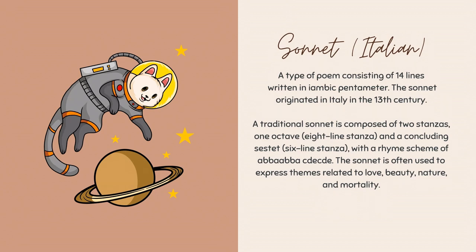The rhyme scheme of the Italian sonnet is A-B-B-A, A-B-B-A, C-D-E, C-D-E. That means the first, fourth, fifth, and eighth lines all rhyme; the second, third, sixth, and seventh lines all rhyme; the ninth and twelfth lines rhyme; the tenth and thirteenth lines rhyme; and the eleventh and fourteenth lines rhyme. Those are the characteristics of the Italian sonnet.